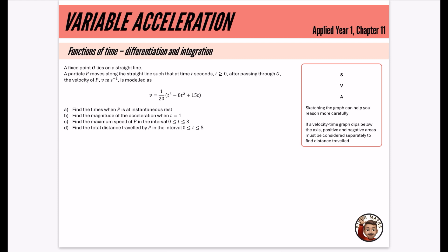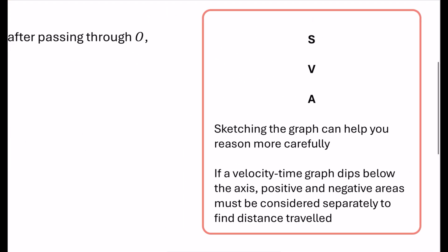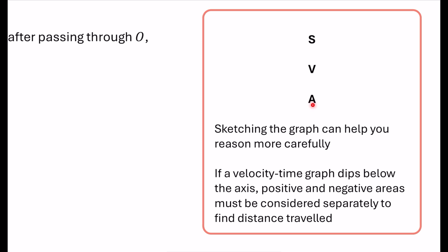For Variable Acceleration, we use differentiation and integration. We use Suvat formulae for constant acceleration. My quick way of remembering which ones we need is I start by writing the letters: S for Displacement, V for Velocity, and A for Acceleration. As we go down this list, you simply differentiate with respect to time, differentiate with respect to time.